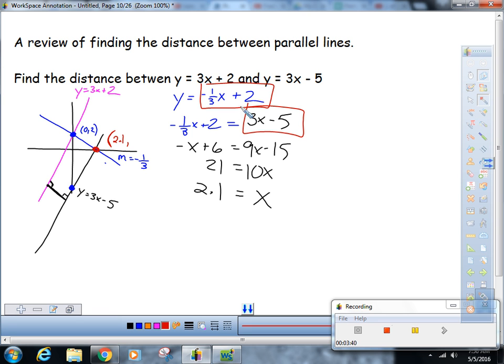Three times 2.1 is 6.3. And, 6.3 minus five is 1.3. So, I'm thinking it's 1.3. But, if I have time on the test, I'm certainly going to check my answer. So, negative one-third times 2.1 is negative 0.7. And, negative 0.7 plus 2 is indeed 1.3. And, now I'm feeling really good about life.